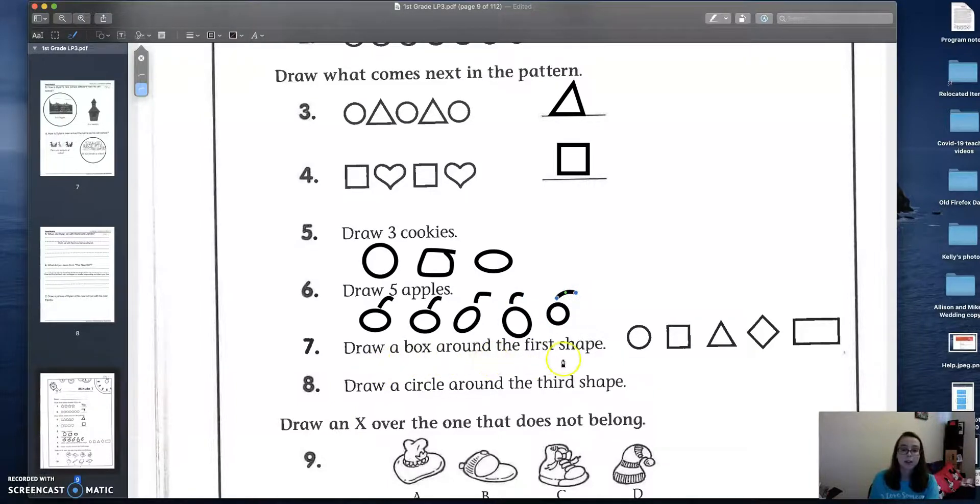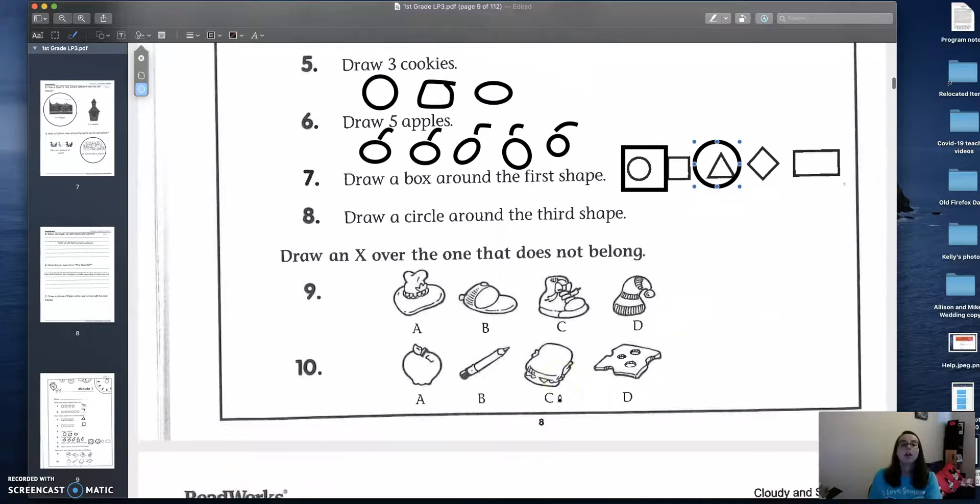Draw a box around the first shape. So which one's first? This one or this one? Good. And we need to draw a box. So that's like a square. And draw a circle around the third shape. So one, two, three. This one's a circle.